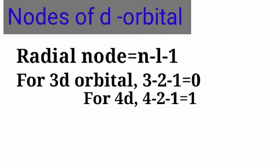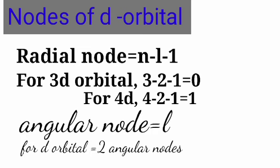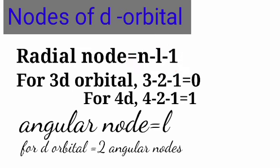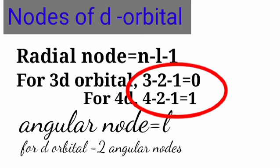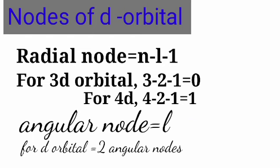Both radial nodes and angular nodes are present in d-orbitals. The number of radial nodes is n - l - 1. In the case of 3d-orbital, radial nodes = 3 - 2 - 1 = 0. For d-orbitals, the l-value is equal to 2, so two angular nodes are present. The nodal planes are present because of these angular nodes.